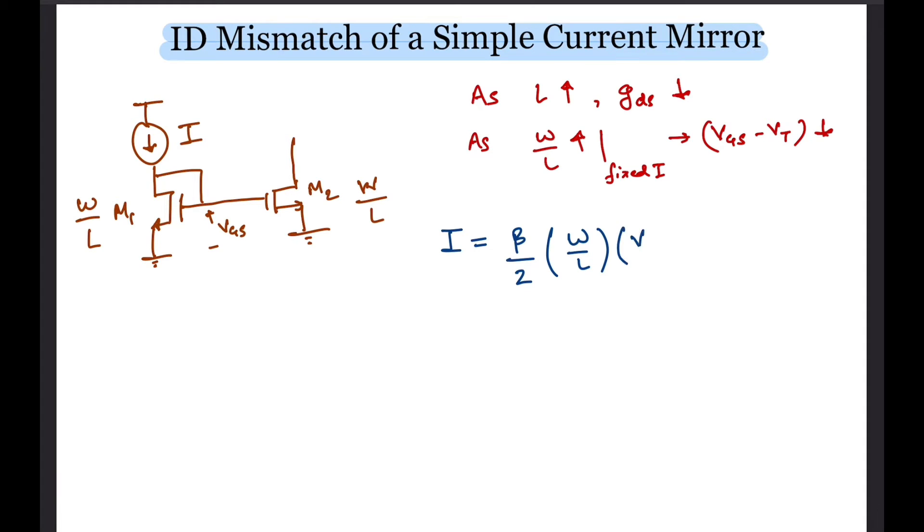Where beta is a process related constant. Now we can have variations in beta as well as VT. In practice there would be random variations in W and L as well, but let's ignore that for this analysis.